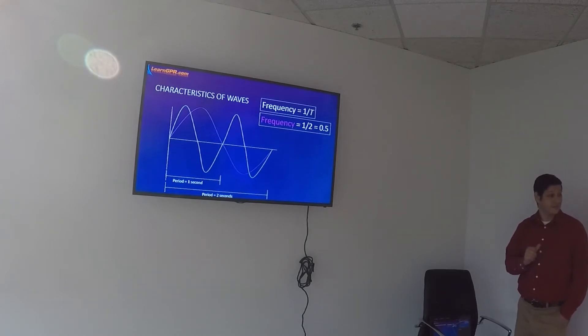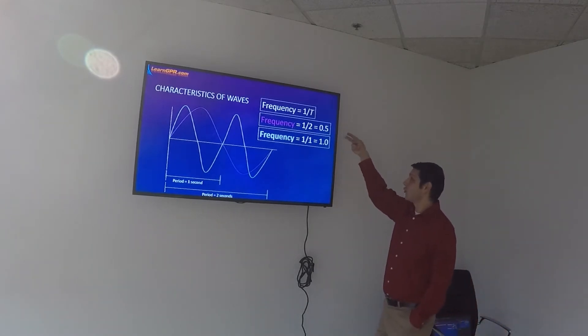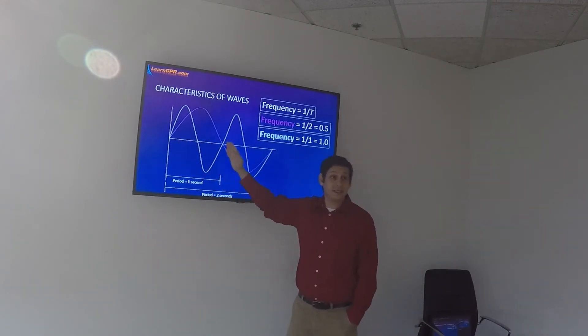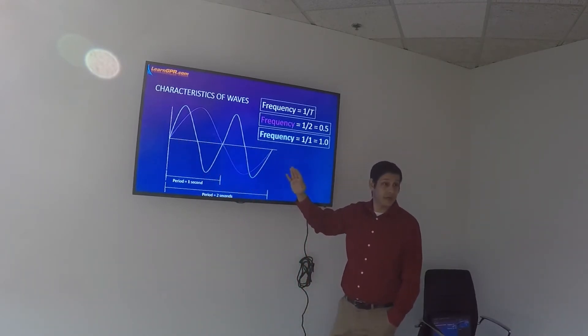It would be higher. It's actually double. The frequency for the blue wave is double the frequency of the purple wave. And so one divided by one is one, which is twice the frequency of the purple wave. And so you can see in the same distance, the blue wave is traveling two cycles. So it's more frequent than the purple wave. That's where the term frequency comes from.